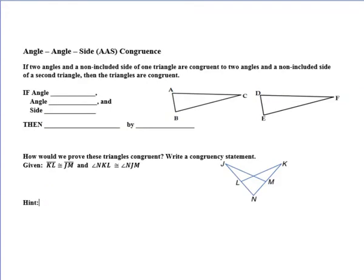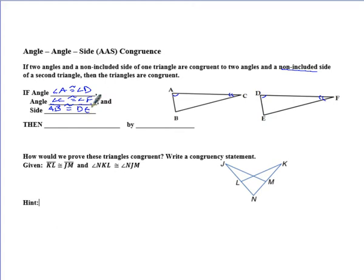Moving on to angle-angle-side congruency — it's essentially the same thing, except now we have two angles and the non-included side. So if I had angle A congruent to angle D and angle C congruent to angle F, the non-included side is any side that doesn't have both of those letters. So I could say AB is congruent to DE. That gives me angle-angle-side, and I could say triangle ACB is congruent to triangle DFE because of angle-angle-side.